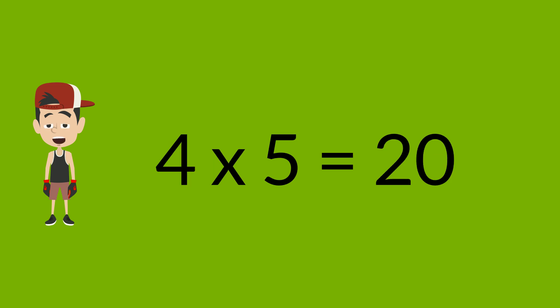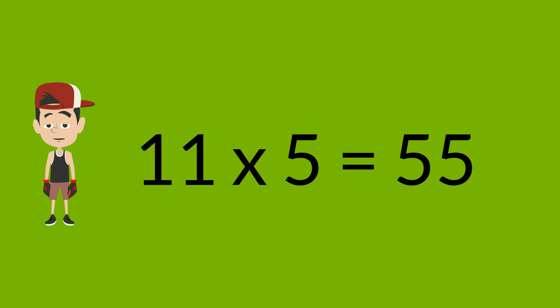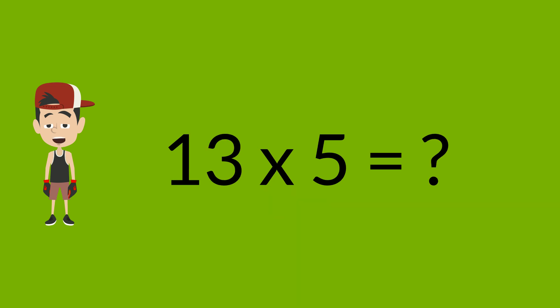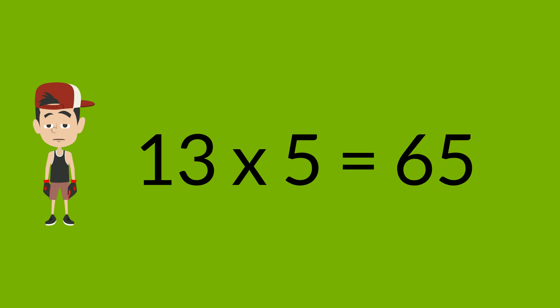4 times 5 is? 4 times 5 is 20. 11 times 5 is? 11 times 5 is 55. 13 times 5 is? 13 times 5 is 65.